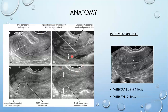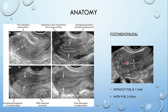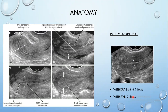In postmenopausal women we don't have those cyclic changes, so normally we have a thin echogenic endometrium. The cutoff values for endometrial thickness in postmenopausal women — the diagnostic ultrasound textbook suggests a new cutoff of 8 to 11 millimeters when there is no PV bleeding, to eliminate unnecessary biopsies of benign conditions. If there is PV bleeding, the cutoff is between 3 to 5 millimeters, with an average of 4 millimeters, which warrants biopsy.